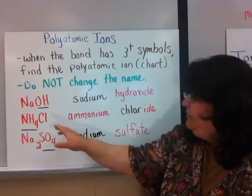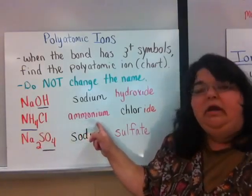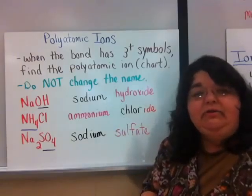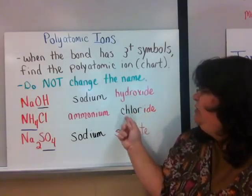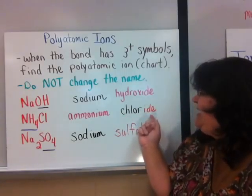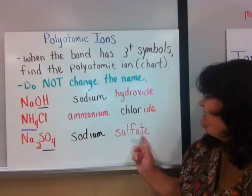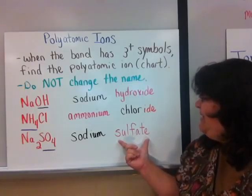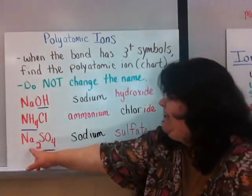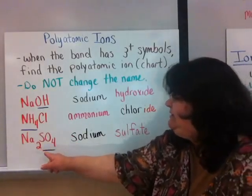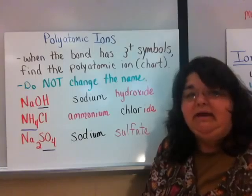In the next example, the polyatomic ion is at the beginning. I take NH4 and write its name, ammonium. Then I follow ionic naming rules: take the beginning of the second name, 'chlor,' and add '-ide.' If the polyatomic ion is at the end, I don't change it to '-ide' — I keep it as the polyatomic ion name. So SO4 is sulfate, Na is sodium, and Na2SO4 is sodium sulfate. The '-ate' ending lets me know it's a polyatomic ion.